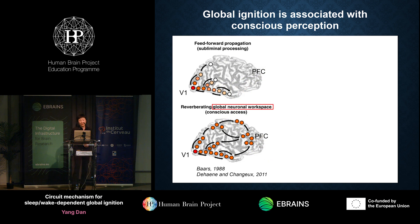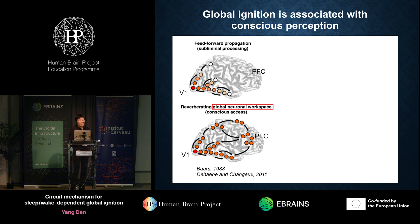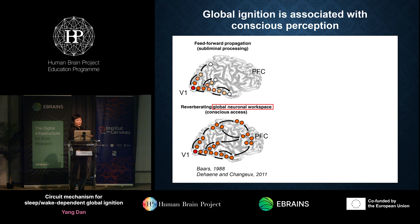So what determines conscious perception? According to the global workspace theory, conscious perception requires propagation of the signal from sensory cortex to parietal and prefrontal areas. These are parts of the global neuronal workspace. Once the global workspace is activated, it amplifies the signal through recurrent excitation. This kind of explosive activation of a large brain network is called global ignition and it's thought to underlie conscious perception.